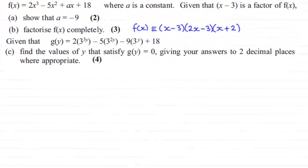Hi there. Now if you remember we were given that f(x) equals 2x cubed minus 5x squared plus ax plus 18, where a was a constant. And we were given that x minus 3 was a factor of f(x) and we had to show that a equaled minus 9. And with that we were asked to factorise f(x) completely, and it gave us this expression here: f(x) was x minus 3 times 2x minus 3 times x plus 2.